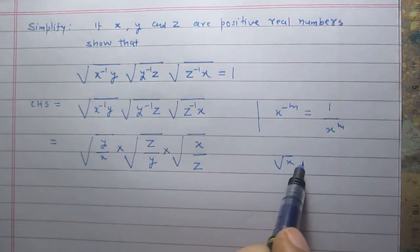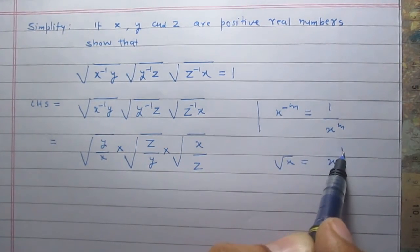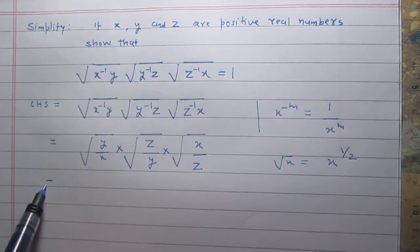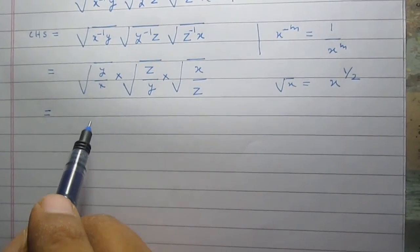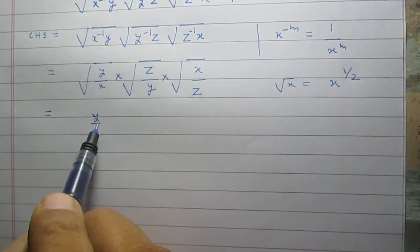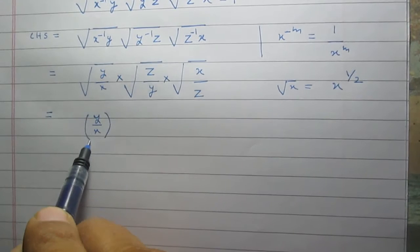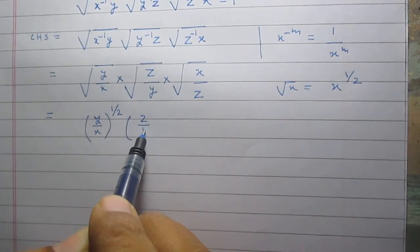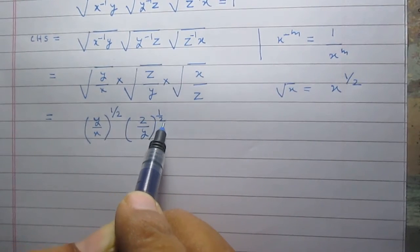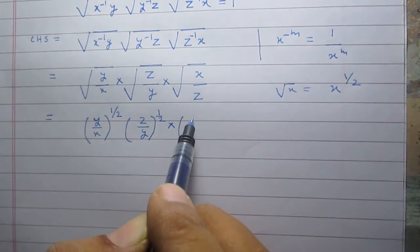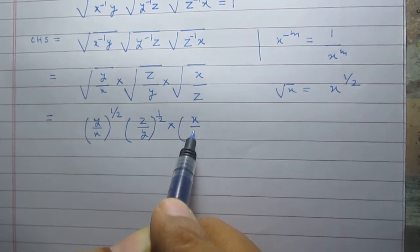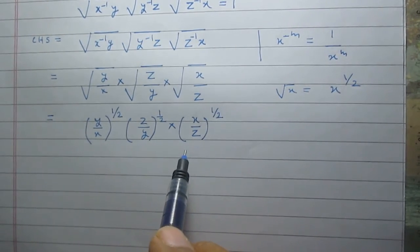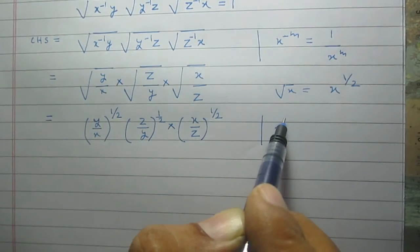Square root of x is nothing but x raised to the power 1 by 2, so we can simplify it as y upon x raised to the power 1 by 2, z upon y raised to the power 1 by 2, then in multiplication with x upon z raised to the power 1 by 2.